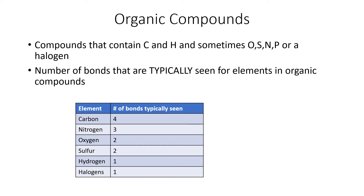When we say organic compounds, what do we really mean? Organic compounds are compounds that contain carbon and hydrogen — every organic compound will contain these two elements. Often there are additional elements as well, things like oxygen, sulfur, nitrogen, phosphorus, and sometimes halogens, but you will always see carbon and hydrogen. Organic compounds are sometimes called carbon-containing compounds. Carbon provides the backbone for all the different structures we're going to see, and organic chemistry is sometimes called the chemistry of carbon.